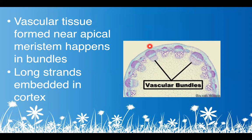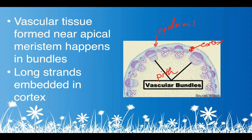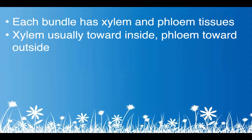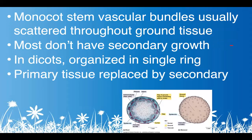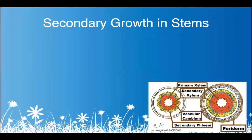Vascular tissue is formed near the apical meristem in bundles — vascular bundles — which are long strands embedded in the cortex. Xylem is on the inside, phloem on the outside. Remember: phloem is part of bark, and bark is on the outside of the tree. Monocots don't have secondary growth.